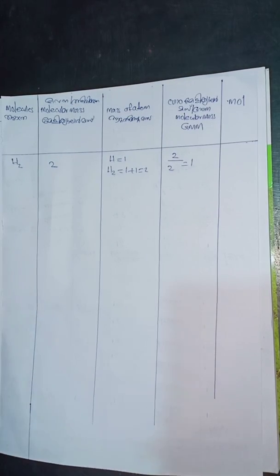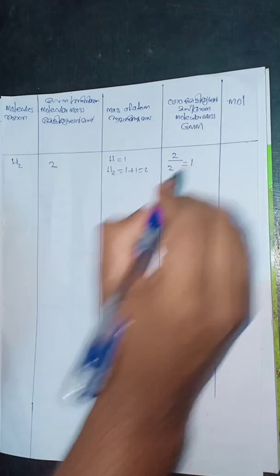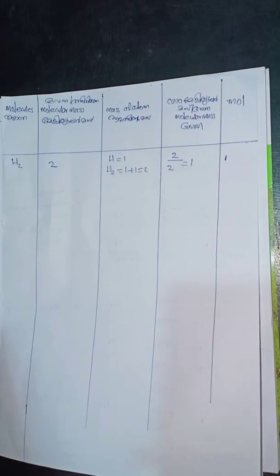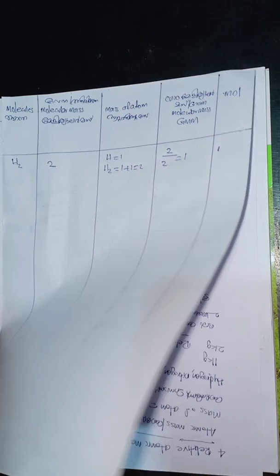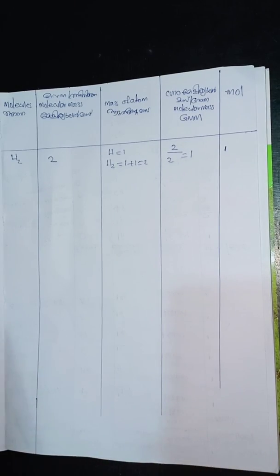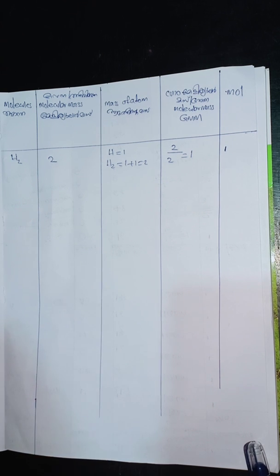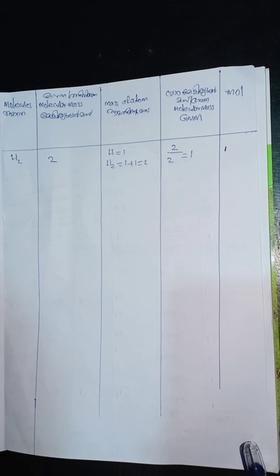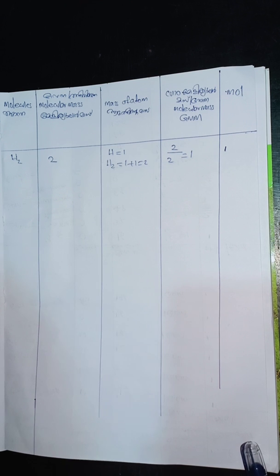1 GM is 6.02×10²³ particles. GM is gram molecular mass.